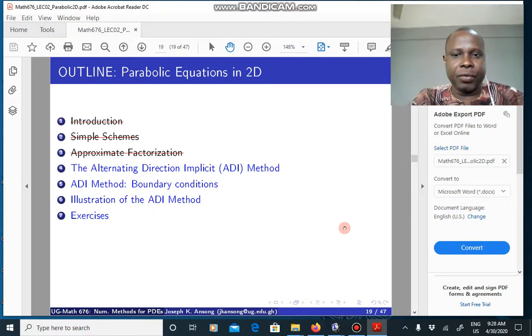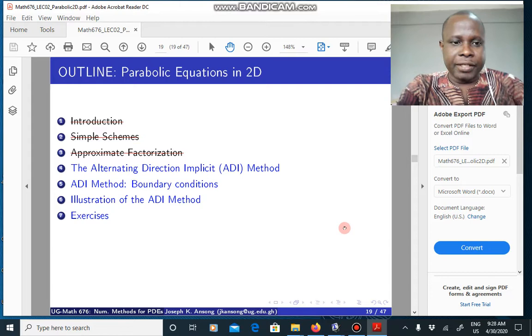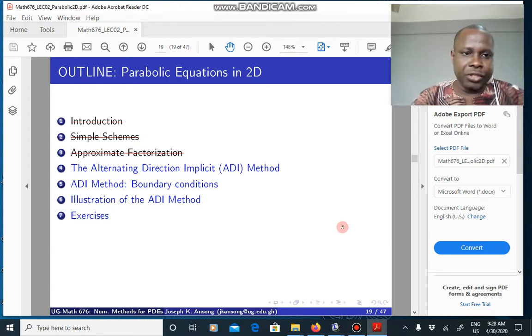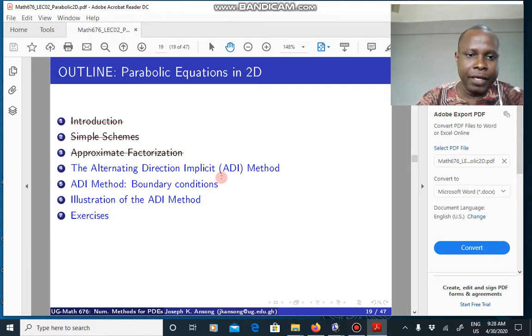Hello guys, you're welcome again. So in this lecture, we want to continue looking at the parabolic equation in 2D. Here, we want to look at the alternating direction implicit or ADI method.